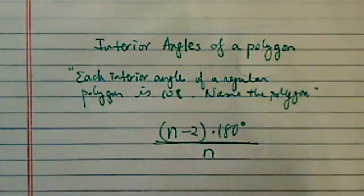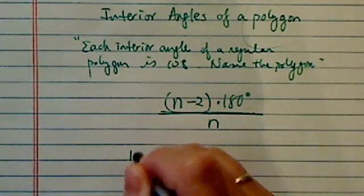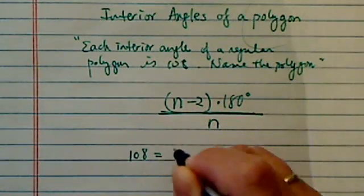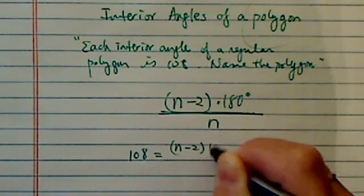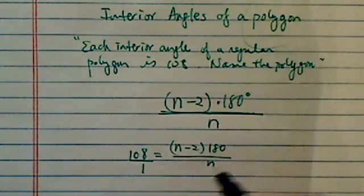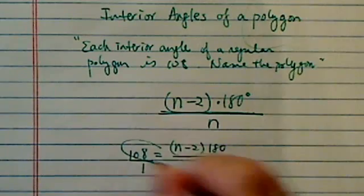Now, for this particular problem, we can just simply plug it in here. We have 108 equal to (n-2) times 180 divided by n.